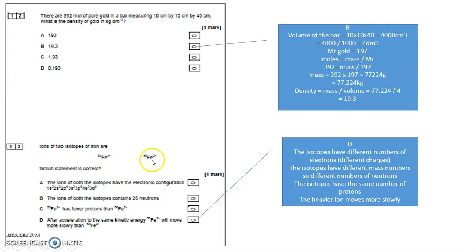The same thing, Fe and Fe. They're both element Fe with the same proton number. So C is wrong. D must be right. After acceleration, it's the same kinetic energy. This ion moves more slowly than this one.